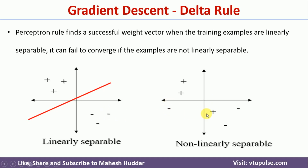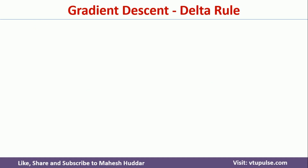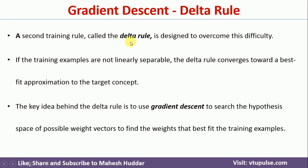But if I go with the second example and draw a straight line, I am not able to classify this particular data successfully. Such data is called non-linearly separable. Whenever we use the perceptron rule on such data, the perceptron rule will fail. In such cases, we need to use another rule called the delta rule, which is also called the gradient descent algorithm.